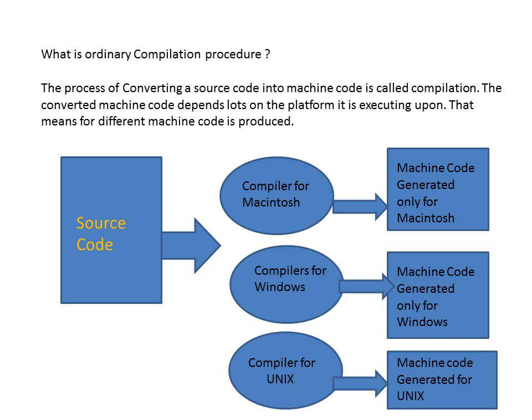On the Internet, we need to overcome this limitation. To come out of this limitation, we have a language called Java. Java overcomes this particular limitation. The process of converting source code into machine code is called compilation.